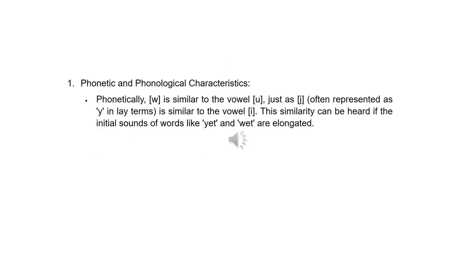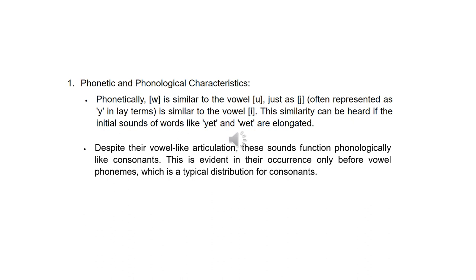The consonant w, as explained in Peter Roach's book, is categorized as an approximant. Phonetically, w is similar to the vowel u, just as y is similar to the vowel i. This similarity can be heard if the initial sounds of words like yet and wet are elongated. Despite their vowel-like articulation, these sounds function phonologically like consonants. This is evident in their occurrence only before vowel phonemes, which is a typical distribution for consonants.